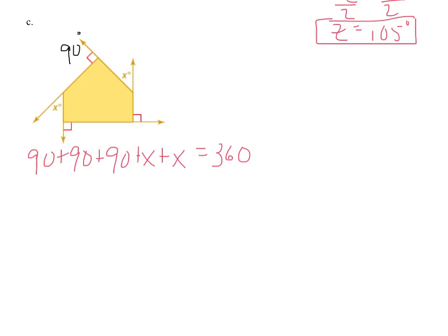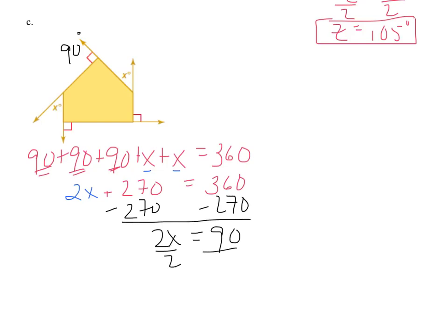I can combine the X-like terms. I can also combine the 90s, because they are constants or plain numbers, to get 270. And again, that all equals a 360. I now have my two-step equation. So, I'm going to subtract 270 to get 90 is 2X. Divide by 2. X equals 45 degrees.